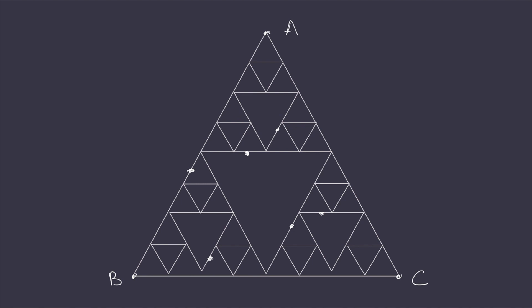Of course, the game doesn't necessarily start on the Sierpinski's triangle — it could start on a point that isn't part of it. Imagine your starting point is somewhere inside the big white space in the middle of the Sierpinski's triangle. Now play the chaos game once. You end up inside the white space in a smaller copy of the Sierpinski's triangle. Your new point is now closer to touching the Sierpinski's triangle than it was before. This is also true when you start from outside the triangle.